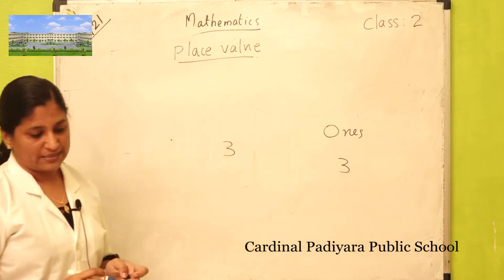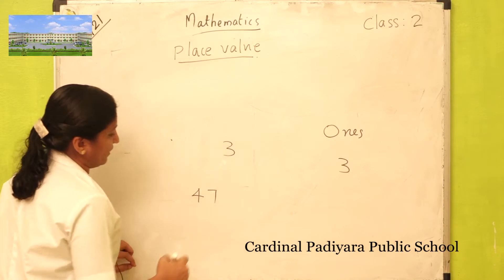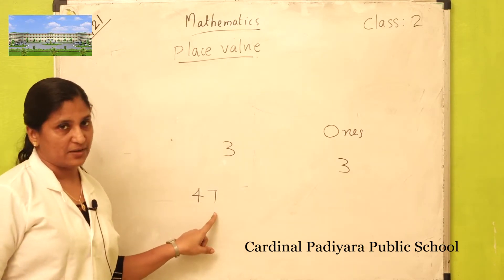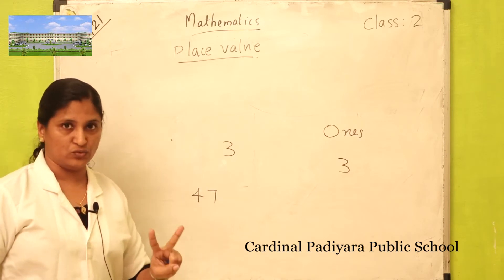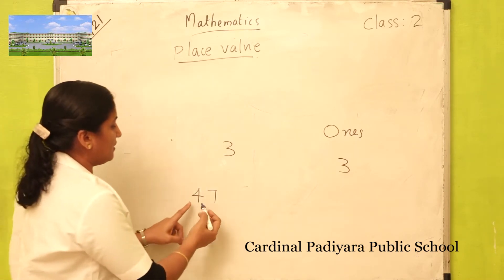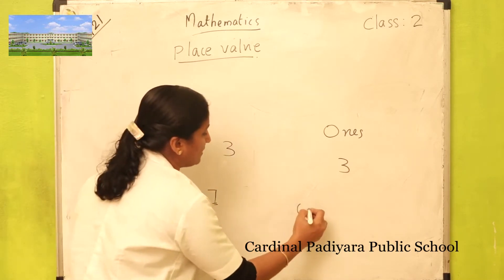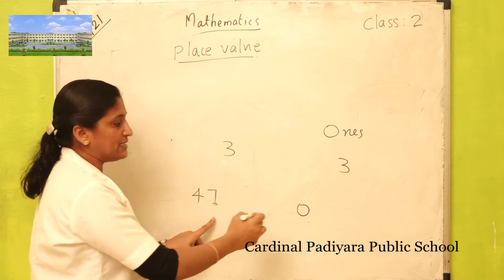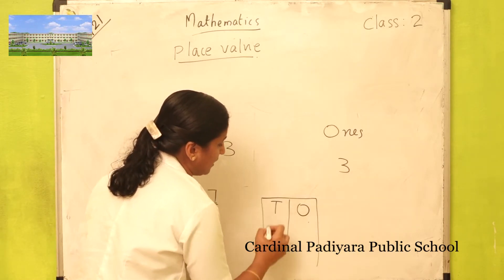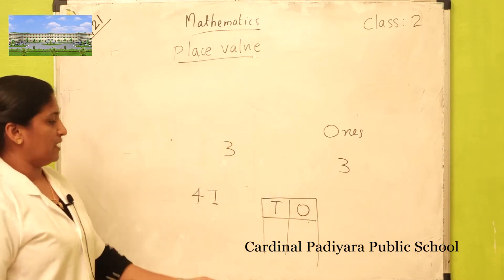Look at this number: forty-seven. How many digits in this number? It is a two-digit number — four and seven. So it has two places. The right side first one is ones, and before ones is tens. The place value starts from the right side of every number.